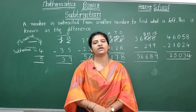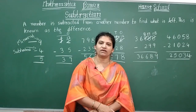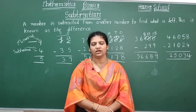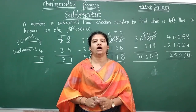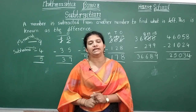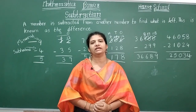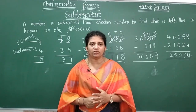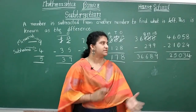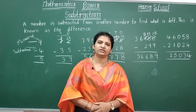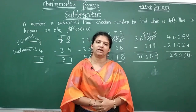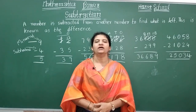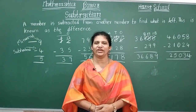With this we end our session on subtraction. In our next session we will start multiplication. Before that, children, you should know and be perfect with your tables up to 20. We will do multiplication with single-digit, two-digit, three-digit, and four-digit numbers. Thank you for watching — please subscribe for more videos.